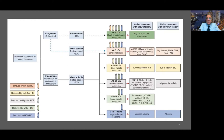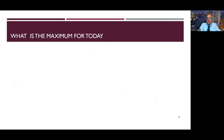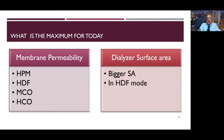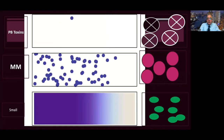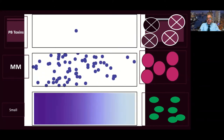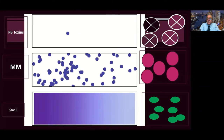Protein-bound uremic toxins can probably only be addressed in the future by using displacers to displace them from albumin, or perhaps by the bio-artificial kidney. What we have available today includes high-performance membranes, hemodiafiltration techniques, medium cut-off, high cut-off, and bigger surface area in hemodiafiltration mode. The middle molecule range removal is satisfactory with current techniques.